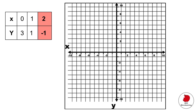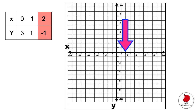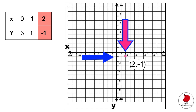Now you have your ordered pair (2, -1). To graph it, start at zero on the horizontal x-axis and move right 2. Then start at zero for y and move down 1. Where those two arrows intersect is the correct ordered pair: 2 comma minus 1.